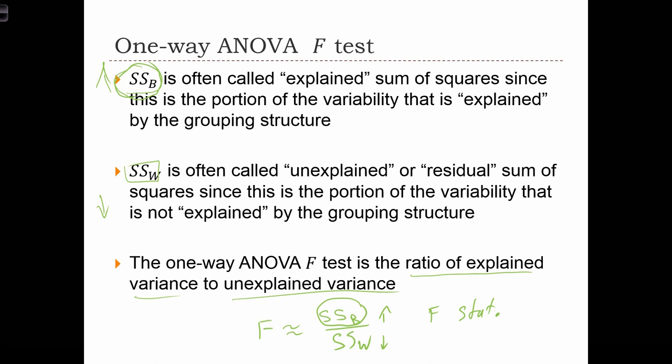But when the opposite is true, when there's a low amount of variability between the groups, that's going to mean that there's a lot of variability within the groups, and our F statistic is going to go down.